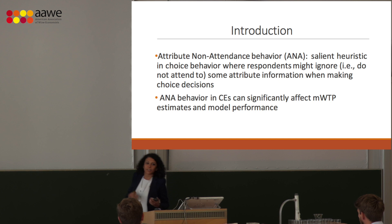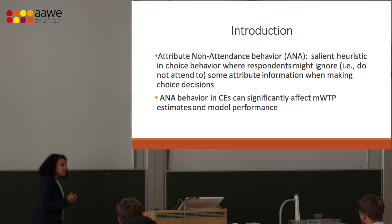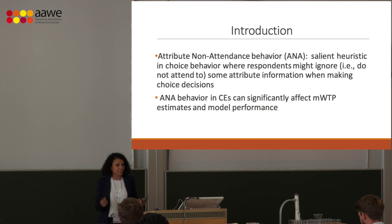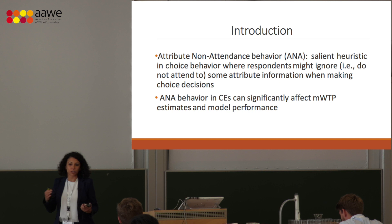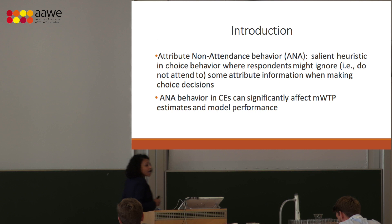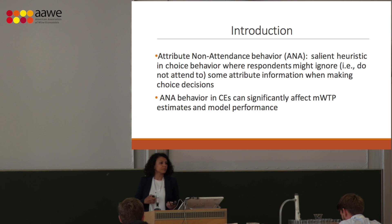There is a big issue in choice experiments: attribute non-attendance behavior. Attribute non-attendance is a salient heuristic in choice behavior that recognizes that people do not attend to all attributes when making choices about a product — they might attend to just some of them. Many studies have shown that attribute non-attendance behavior does affect marginal willingness to pay estimates and model performance.